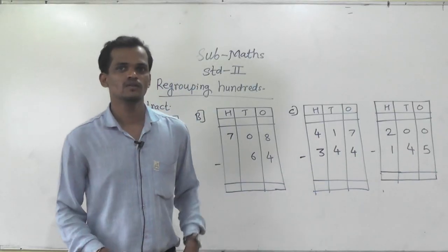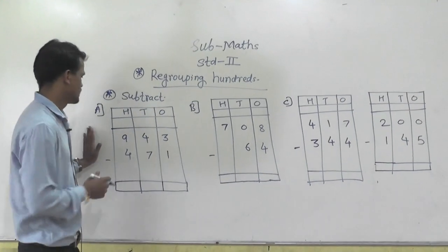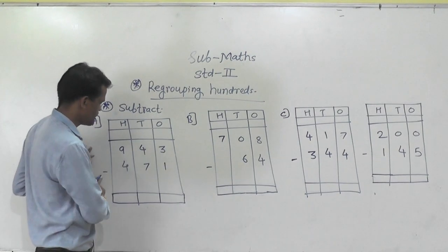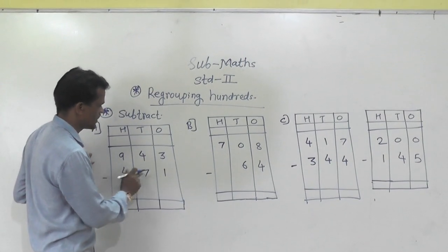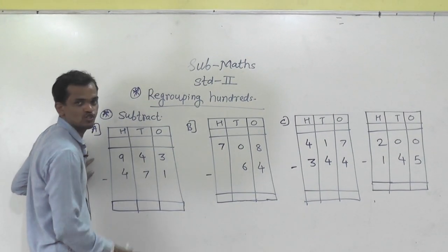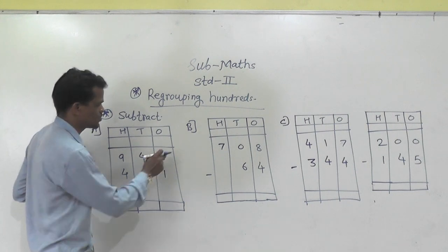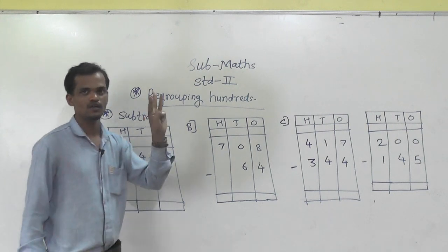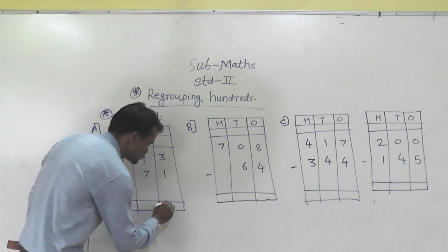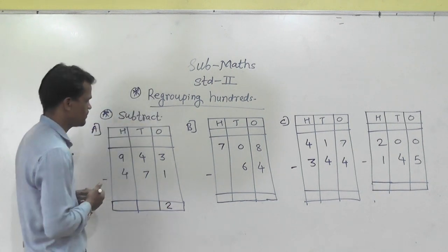Now, regrouping hundreds. Example: 943 minus 471. Subtract the values, starting from the ones place. 3 minus 1 is 2 — write 2 in the ones column.